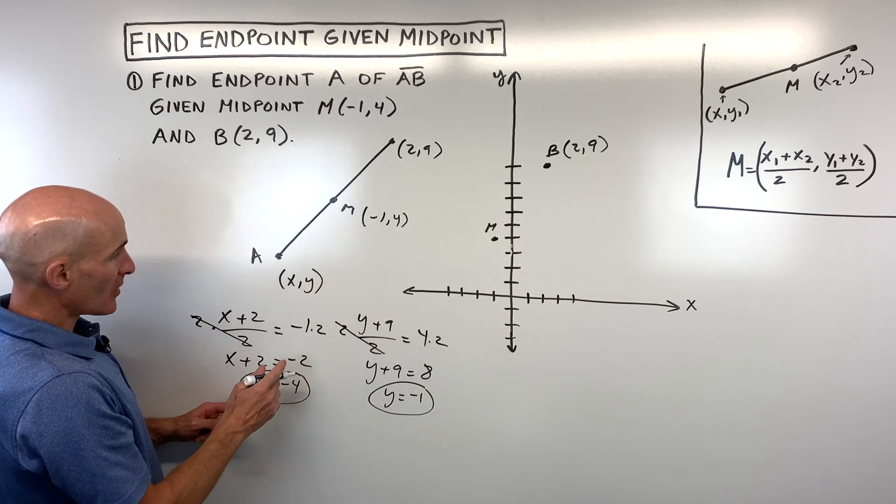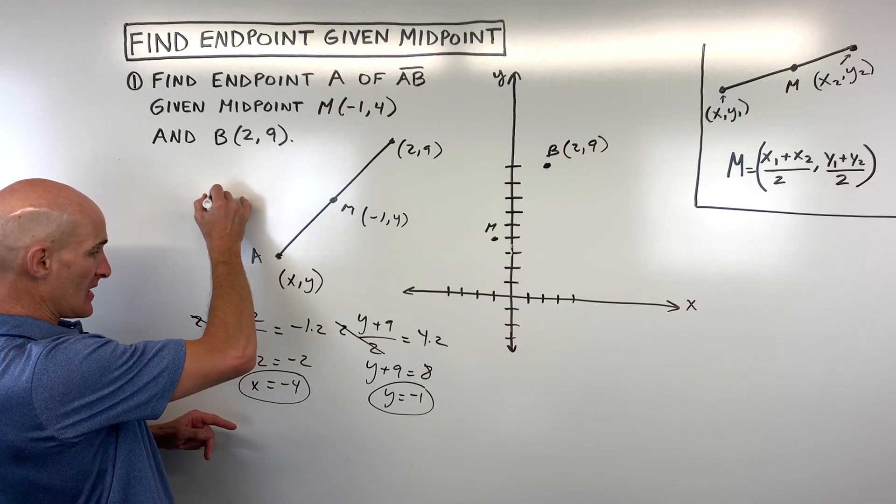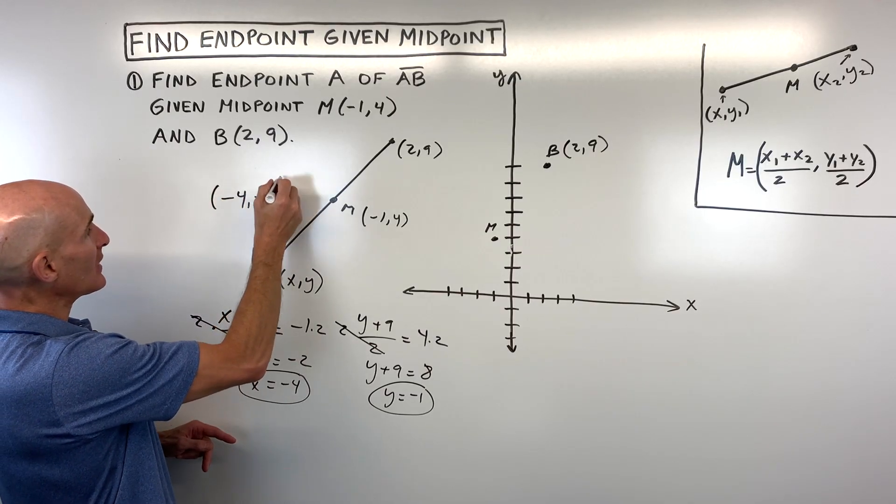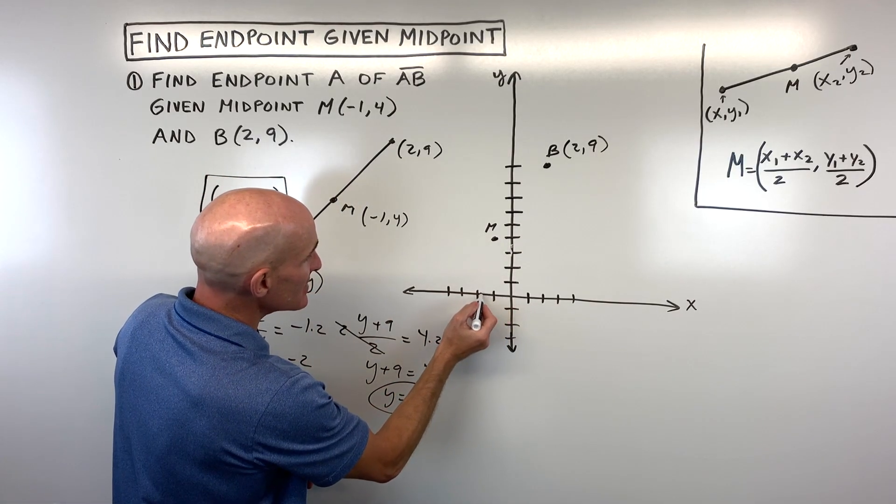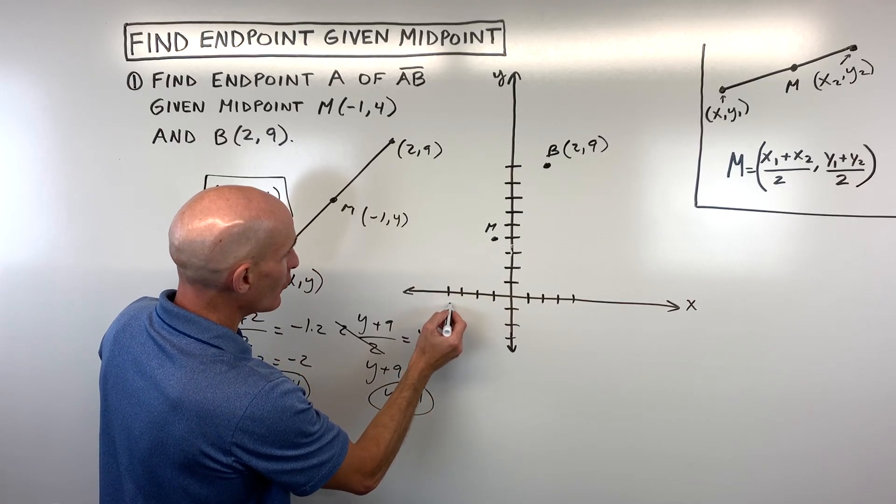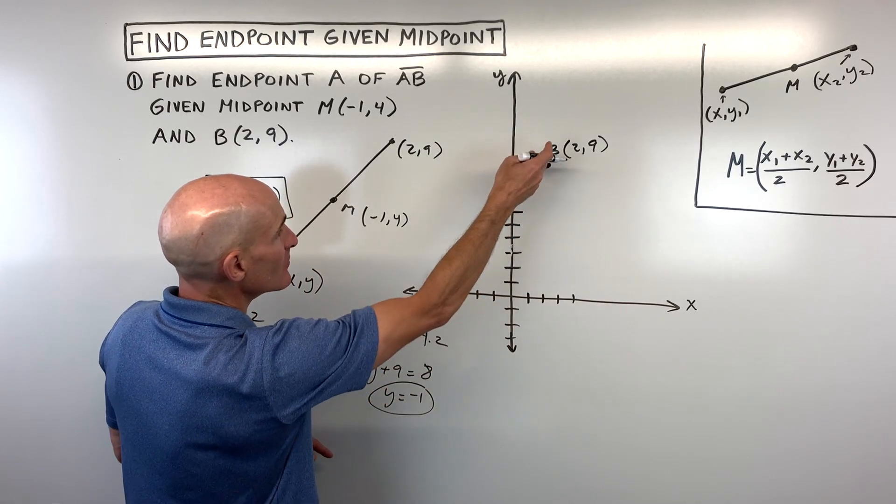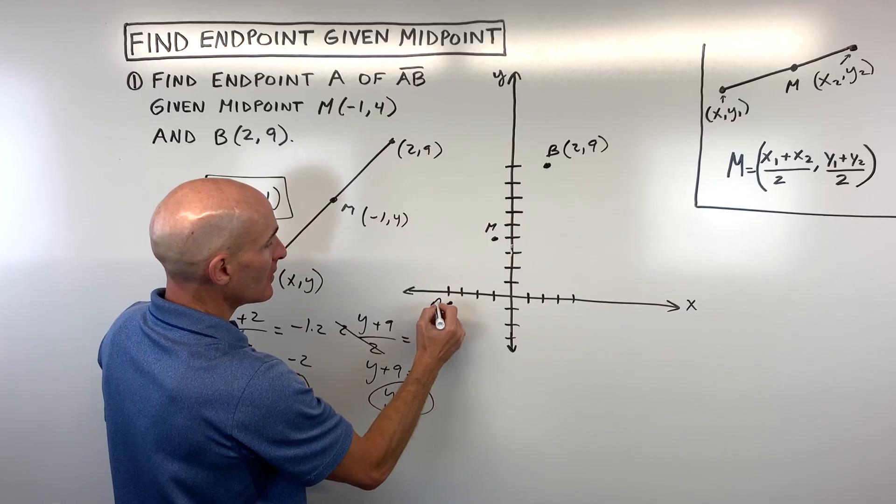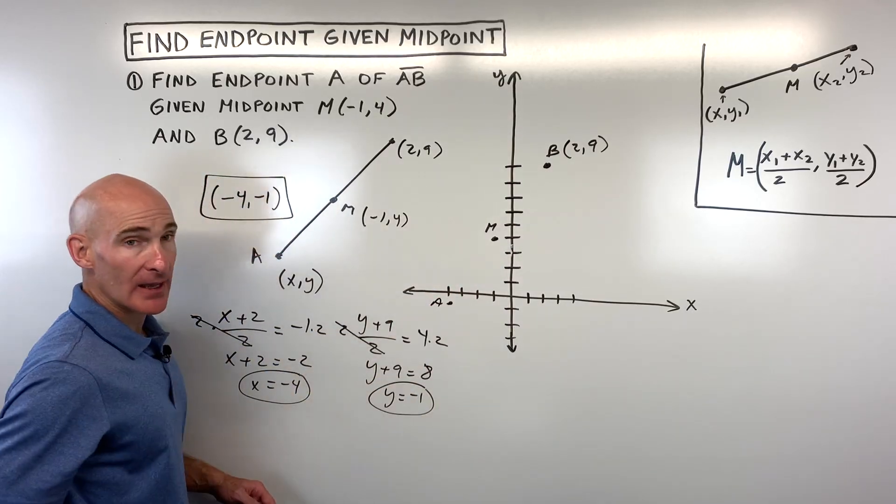So the coordinates of our point here, A is going to be at negative four, negative one. And if we plot that, you can see this is left four, down one right here. And you can see that the midpoint is halfway between point A and point B.